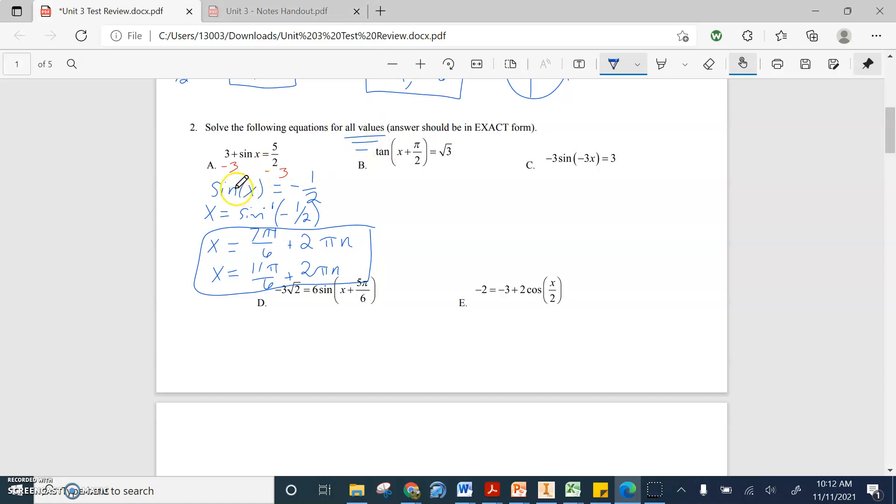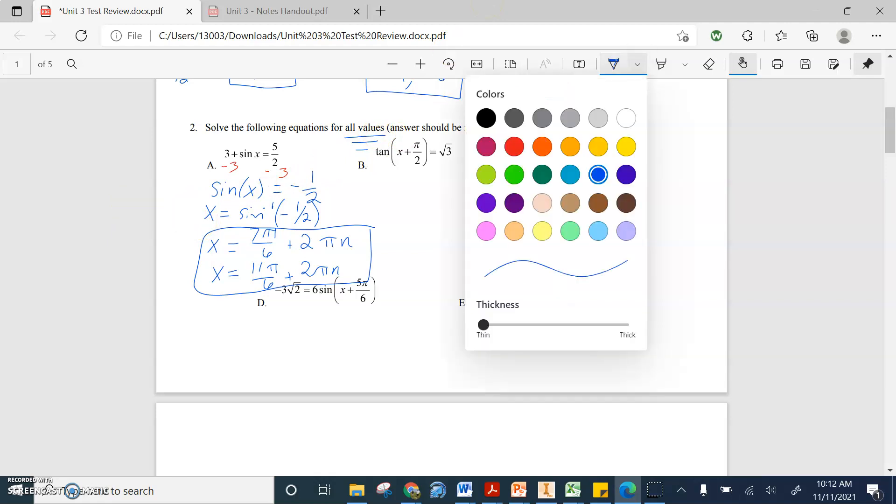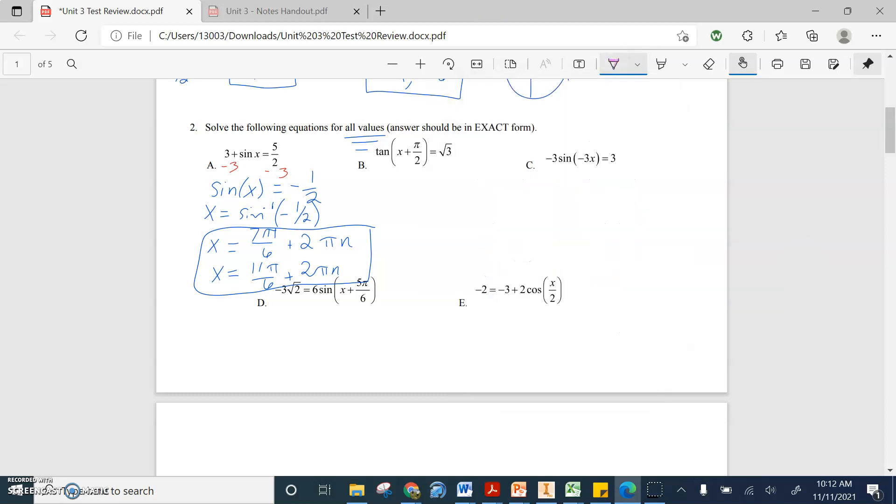It's get the trig by itself, then undo the trig function, and then get the x value by itself, or the t value, or whatever the variable is. So now in this case, b, let's look at b, I'll even change colors for us here. We've already got the trig function by itself, so we're just going to undo that and say x plus pi over two. If we're going to undo tangent, we're taking the arctan of the left, and that is equal to the arctan of the right.